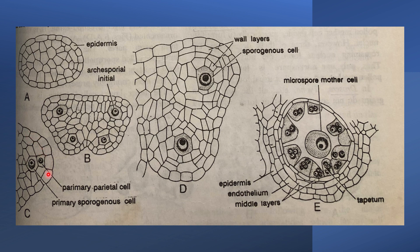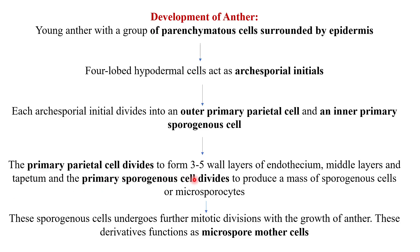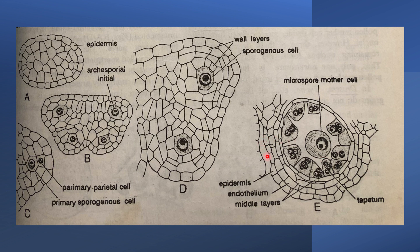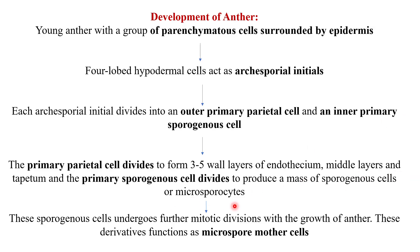The archesporial initial divides into an outer layer of primary parietal cells and an inner layer of primary sporogenous cells. The primary parietal cell divides to form three to five layers of endothecium, middle layers, and tapetum. The primary sporogenous cell divides to produce a mass of sporogenous cells, also called microsporocytes.